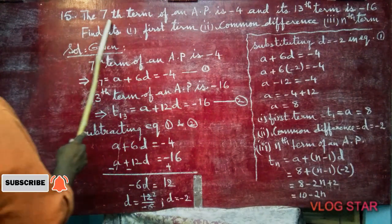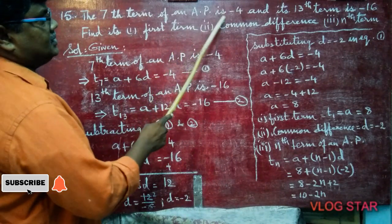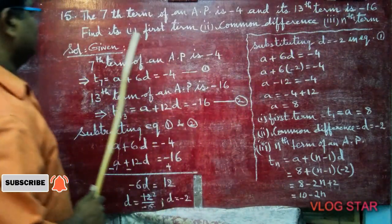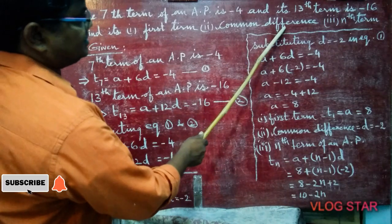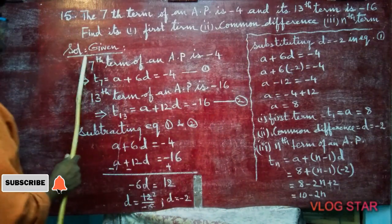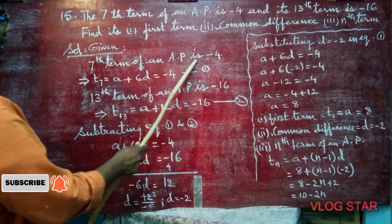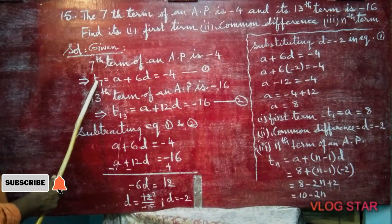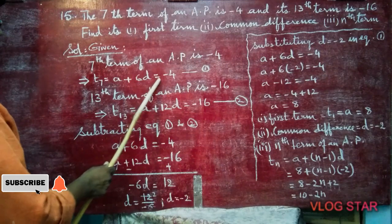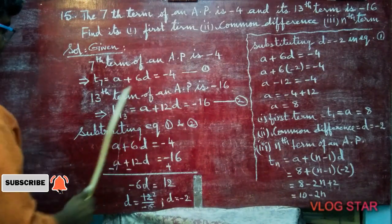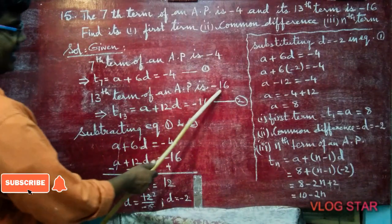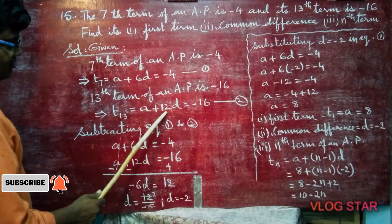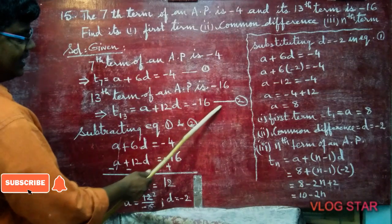Problem 15. The 7th term of an AP is minus 4 and its 13th term is minus 16. Find its first term, common difference, and nth term. Solution: Given the 7th term of an AP is minus 4, so T7: A plus 6D is equal to minus 4. This is equation number 1. The 13th term is minus 16, so T13: A plus 12D is equal to minus 16. This is equation number 2.